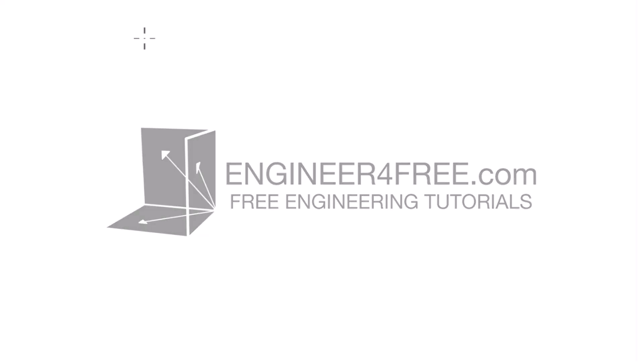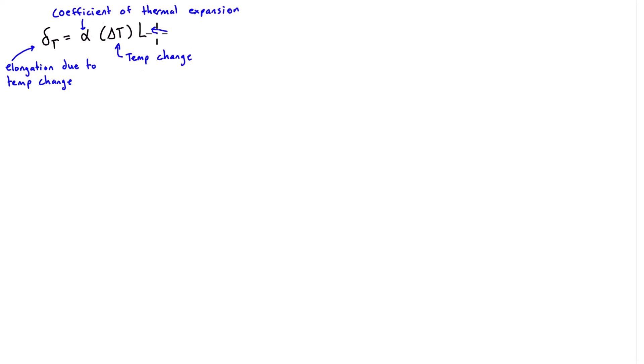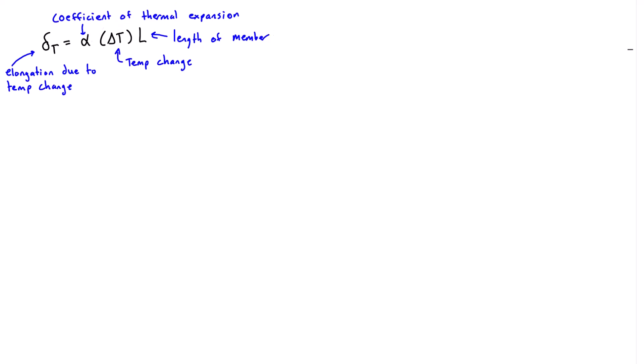Welcome back. In this video we're going over the thermal expansion of materials due to a change in temperature. This video is part of a full free course on mechanics of materials, link in the description. The formula we're going to use for thermal expansion is δT = α·ΔT·L, where δT is the elongation due to temperature change, α is the coefficient of thermal expansion, ΔT is the temperature change, and L is the length of the member. Alpha is a material constant — copper, aluminum, steel each have a different coefficient — with units of per degree C or per degree F depending on the units of the temperature change.